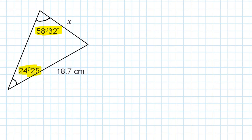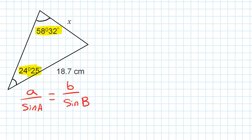The sine rule is: A over sine A is equal to B over sine B. That's the rule.